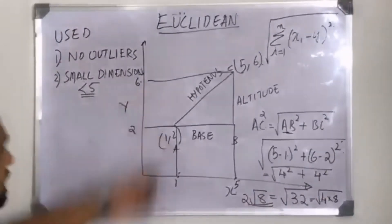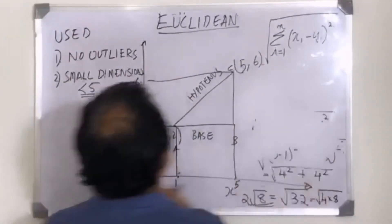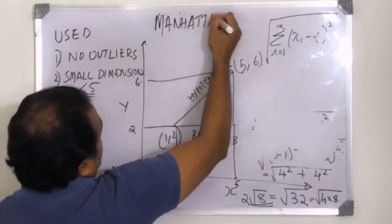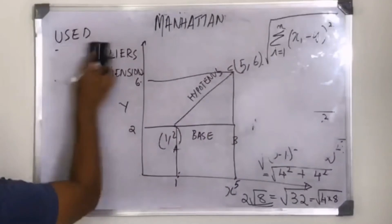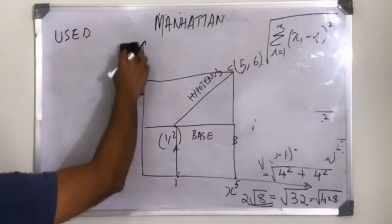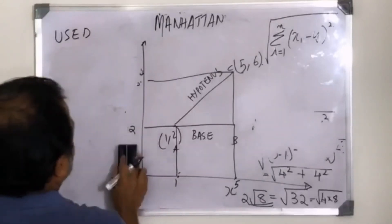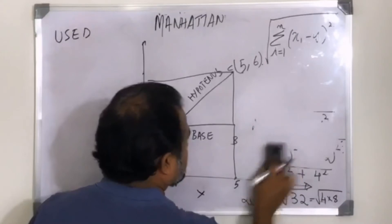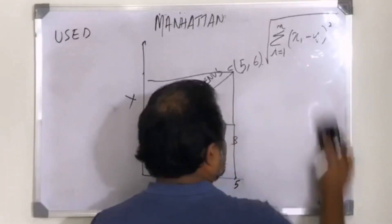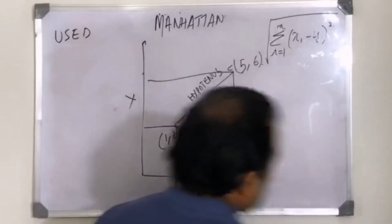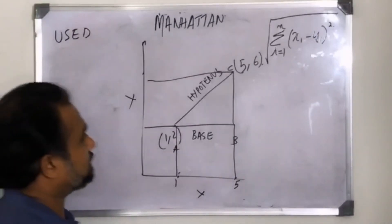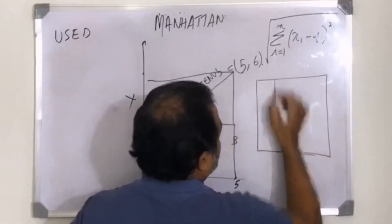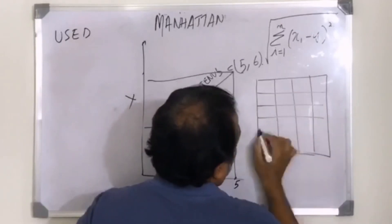Now let's calculate the Manhattan distance for the same example. Manhattan distance, as the name suggests, comes from the city of Manhattan in the US. It is a busy uptown area, and if I put a map of Manhattan, it will look like a grid — busy streets going horizontally and vertically with buildings in between.